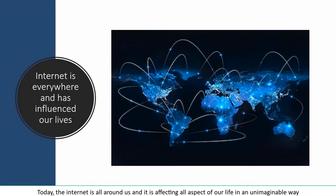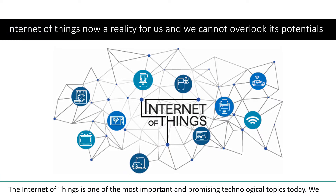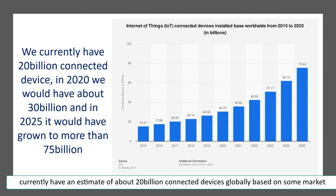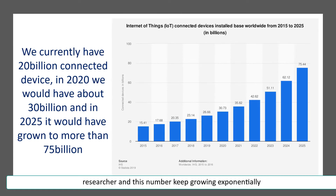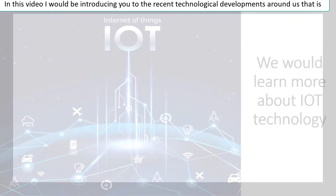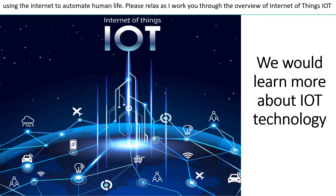Today, the Internet is all around us, and it is affecting all aspects of our life in an unimaginable way. The Internet of Things is one of the most important and promising technological topics today. We currently have an estimate of about 20 billion connected devices globally, and this number keeps growing exponentially. In this video I would be introducing you to the recent technological developments around us that are using the Internet to automate human life. Please relax as I walk you through the overview of Internet of Things, IoT.